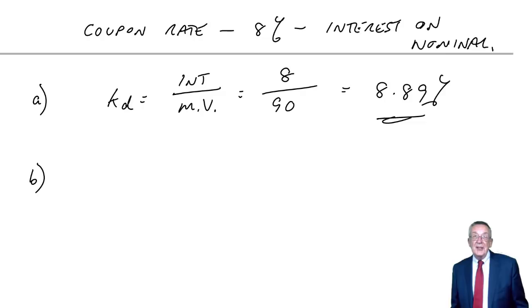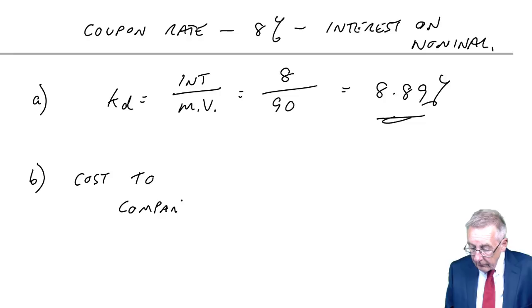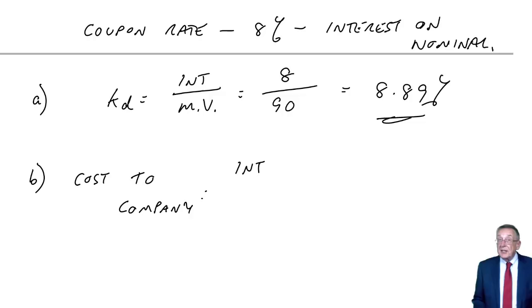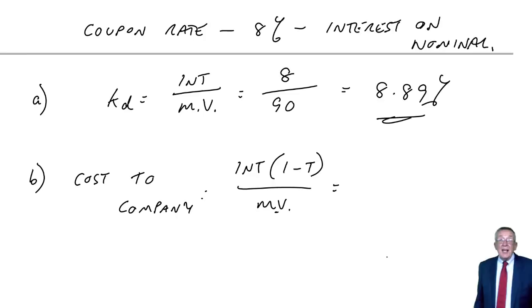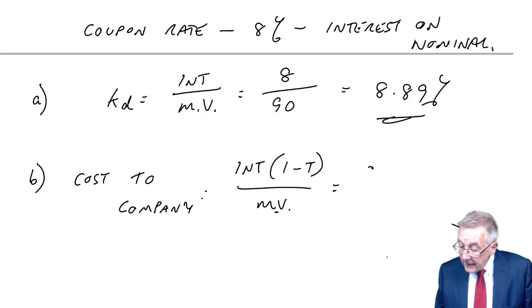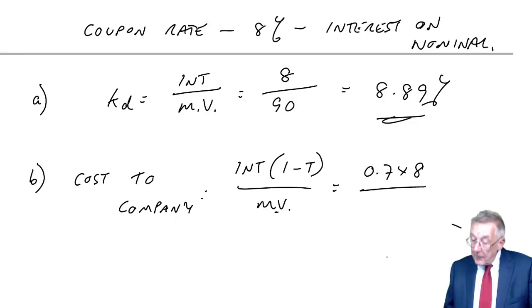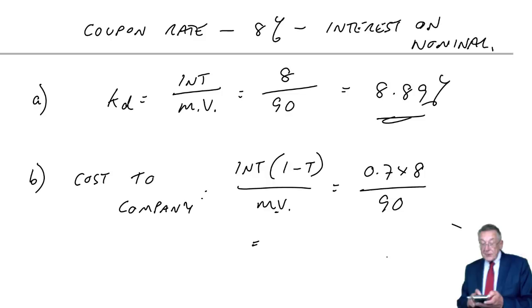And so, the cost of the company is the interest less the tax they're going to save. So, interest times 1 minus the tax rate divided by market value. Is here there's tax of 30%, so they will pay $8 interest. But their tax liability will be reduced by 30% of $8, so the net cost will only be 0.7 or 70% of $8. And they're paying it on a market value of 90. Which comes to 0.7 times 8 divided by 90 is 6.22%.